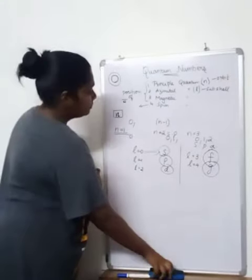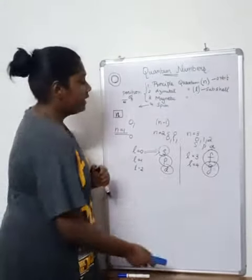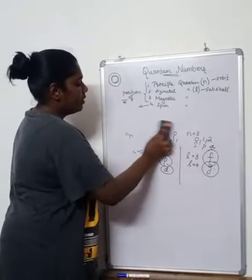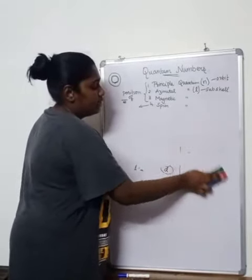So, this is azimuthal quantum number. We will see further about it later. So, this is all about the principal quantum number and the azimuthal quantum number.